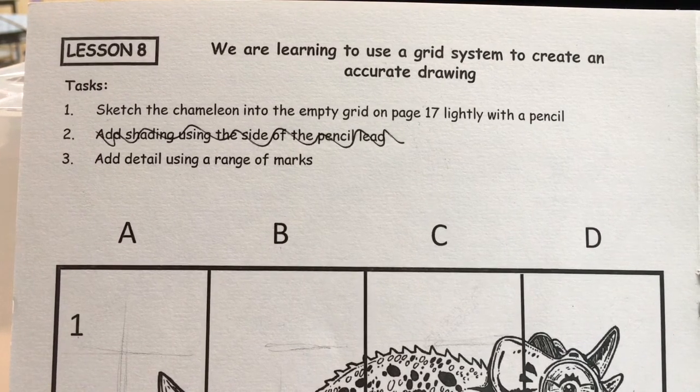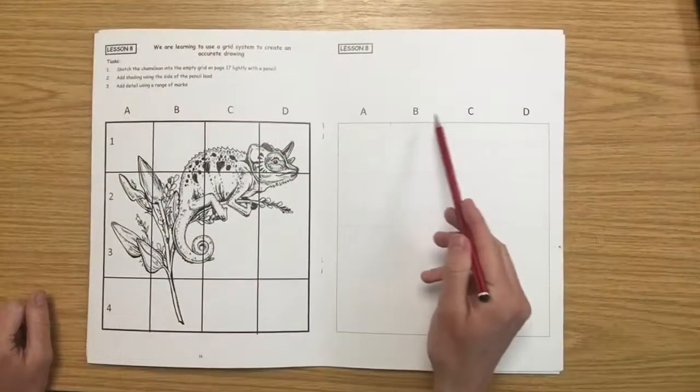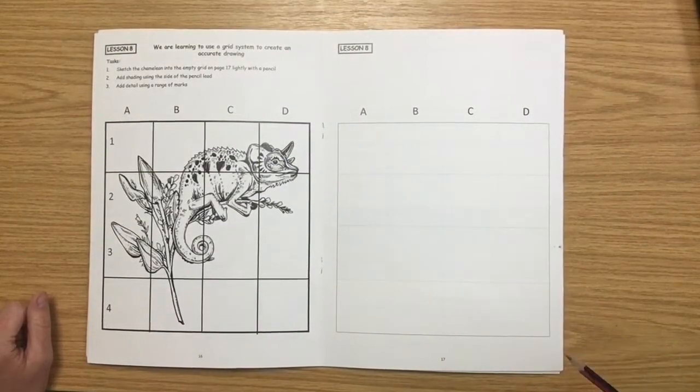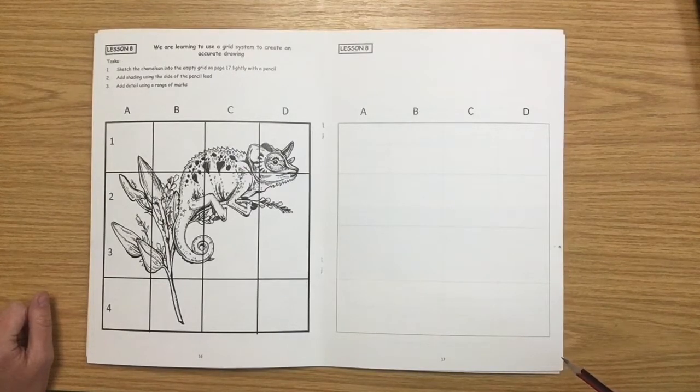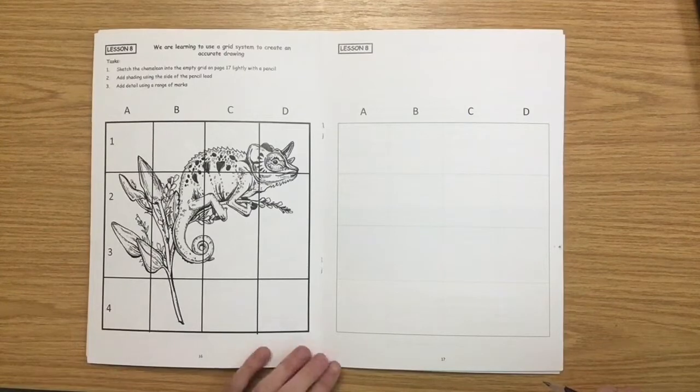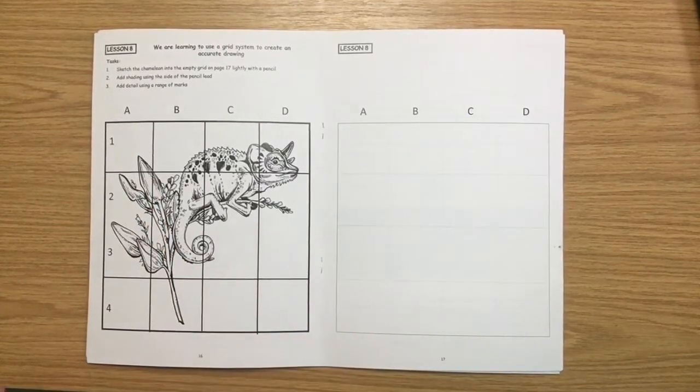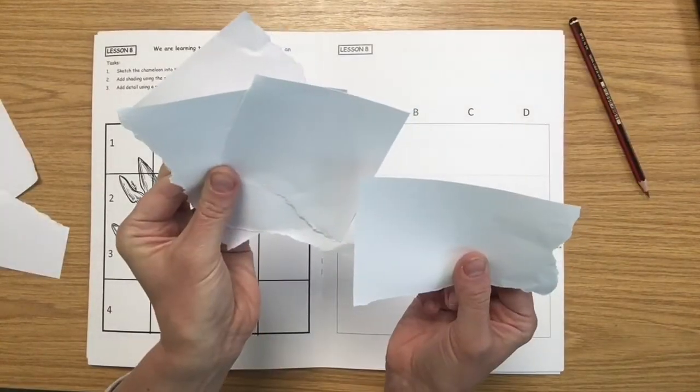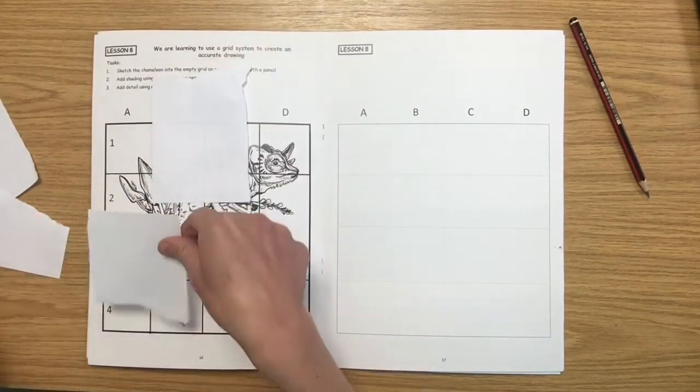Number three, you're going to add detail using a range of marks. So you're going to draw your chameleon into this box here on page 17. Notice how the grid is exactly the same on page 16 and 17. What you need to do is use each square like a map to draw it accurately. You'd start with box A1 and sketch that with a sharp pencil into box A1 on page 17.